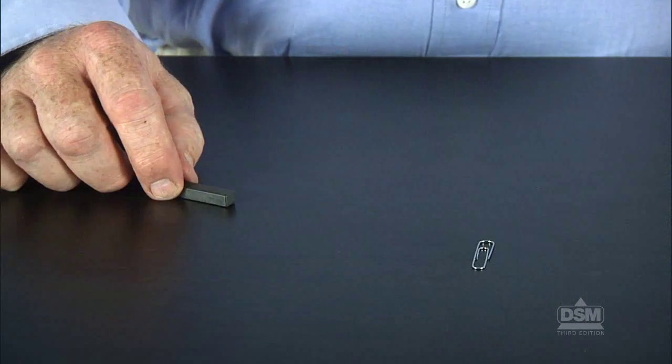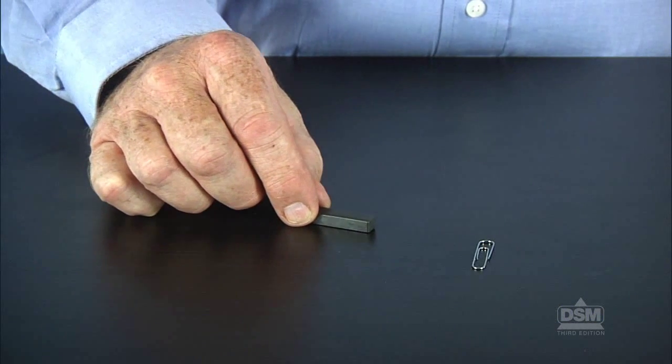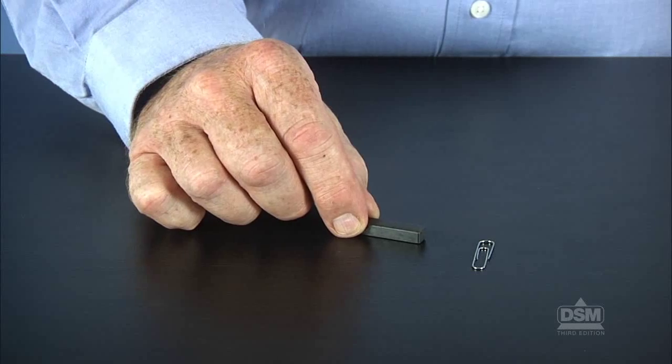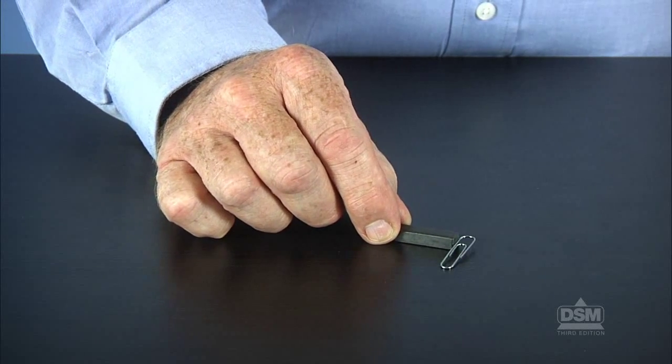When students have finished testing with these three materials, have them place the paper clip and magnet flat on a non-metallic desk and slowly move the magnet toward the paper clip until the clip is drawn to the magnet.